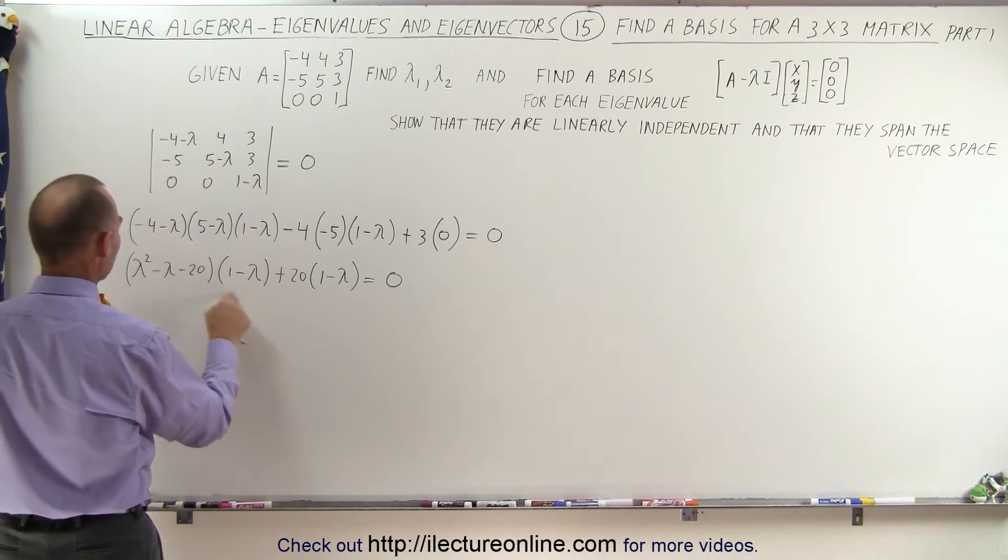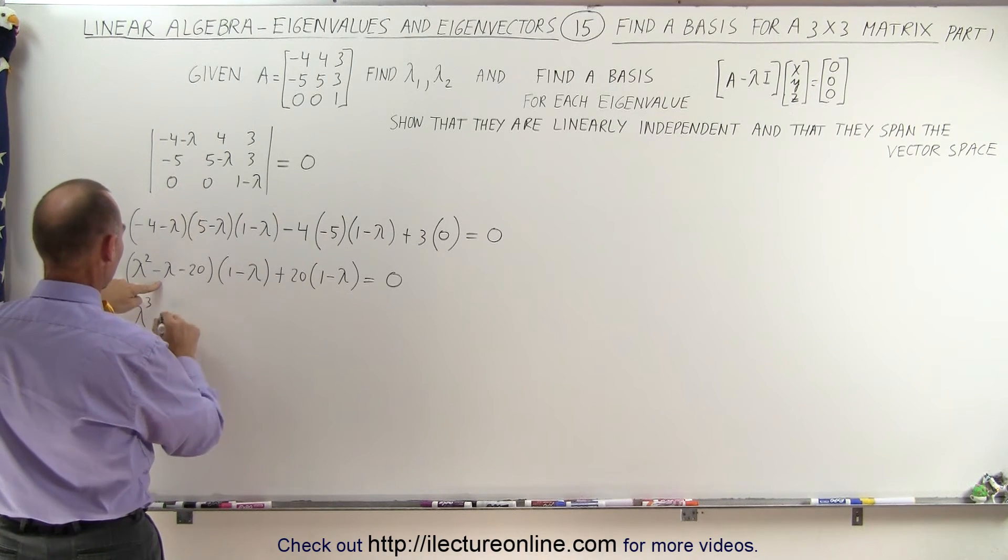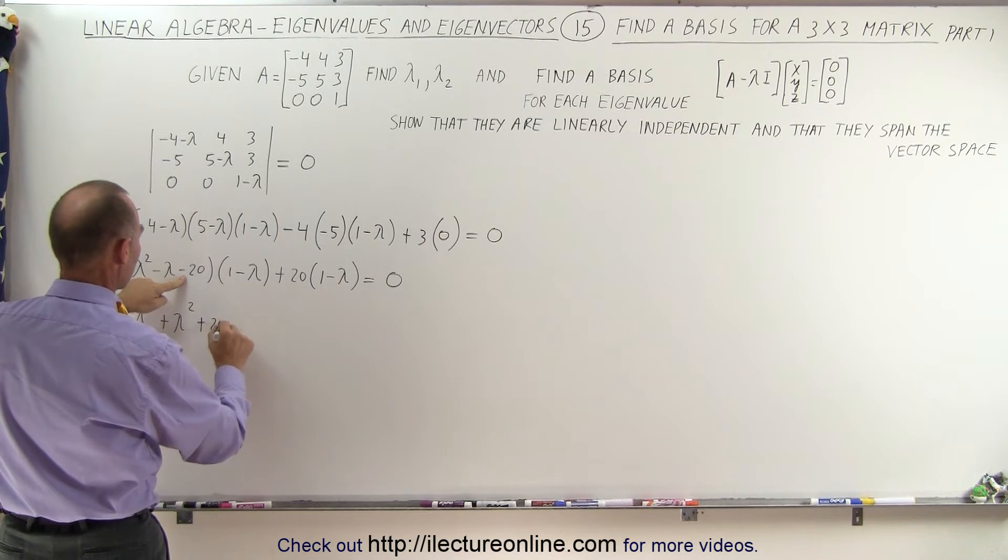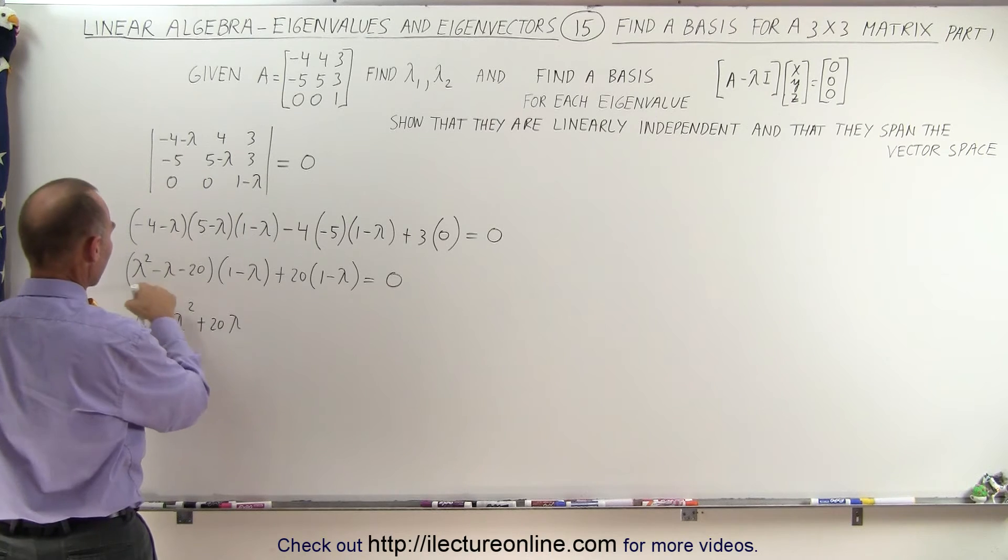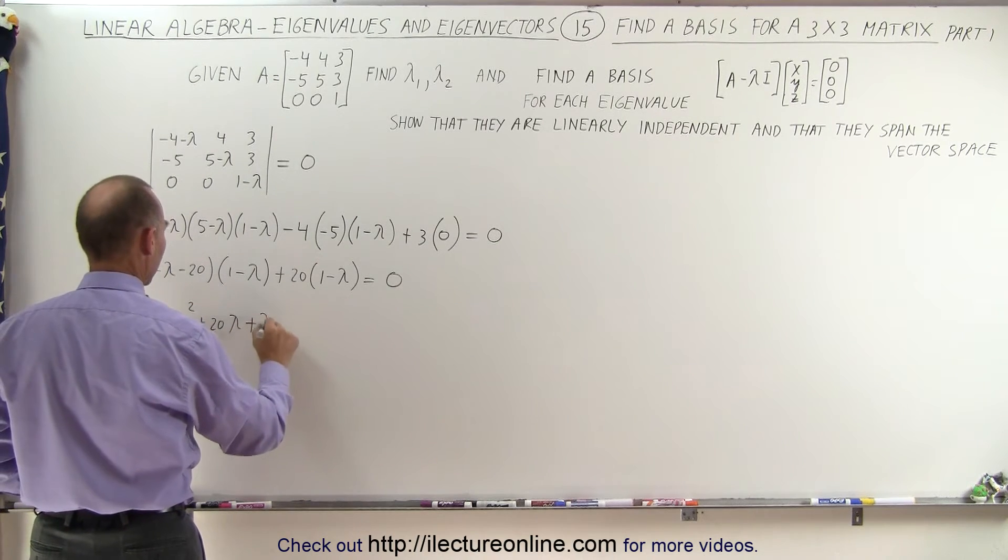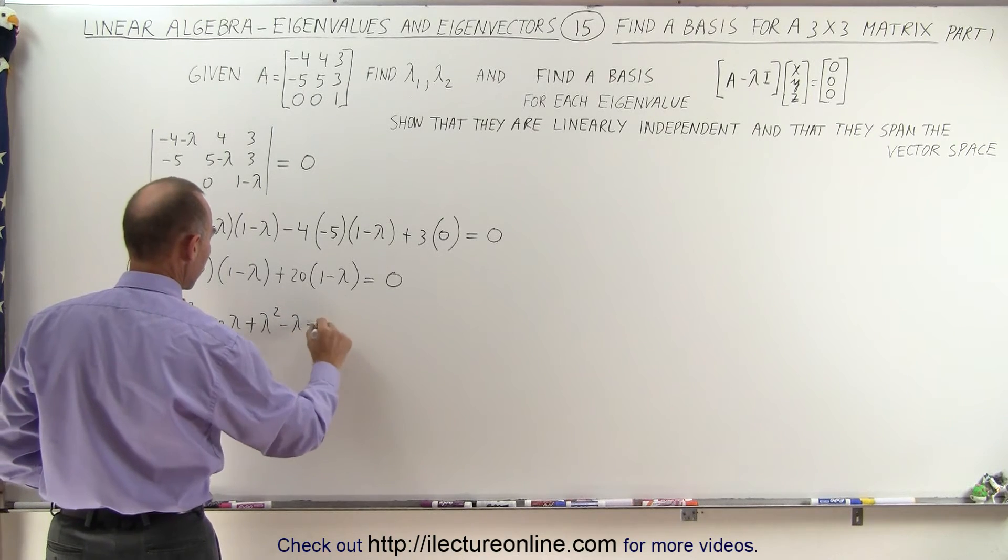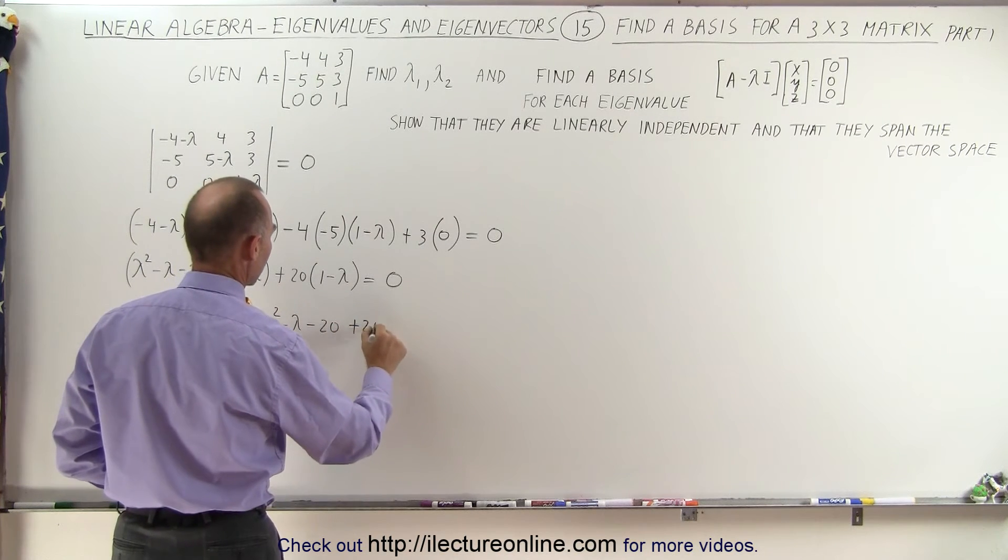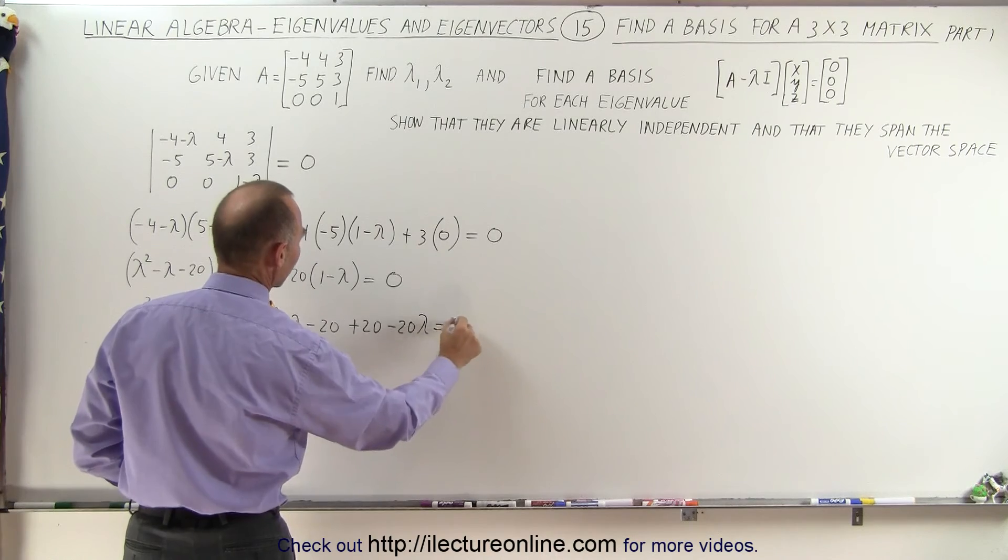Now here we're going to multiply these two together. So this times this gives us lambda cubed plus lambda squared and plus 20 lambda. So I multiply all these three times lambda. Now I'm going to multiply them again times 1 which is plus lambda squared minus lambda and minus 20. So it takes care of this and then we have plus 20 and minus 20 lambda and that's equal to 0.